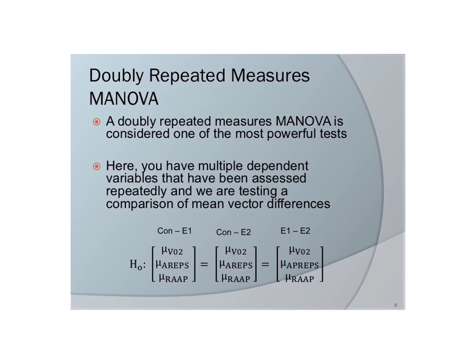There is a special case of a repeated measures MANOVA called a doubly repeated measures MANOVA. This is considered one of the most powerful statistical analyses, but it is also extremely hard to interpret and univariate approaches are often just easier. In a doubly repeated measures MANOVA, you have multiple dependent variables that have been assessed repeatedly, and you're making comparisons of the mean vector differences.